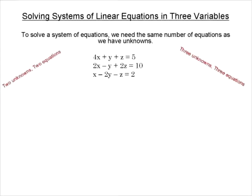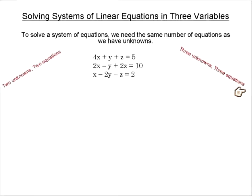Remember, if we're trying to solve for unknown variables, we need the same amount of equations as we have unknowns. So when we did systems of two equations, we had two unknowns, so we needed two equations. Now we have three unknowns, so we need three equations.